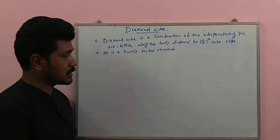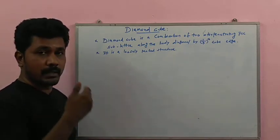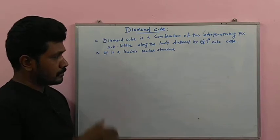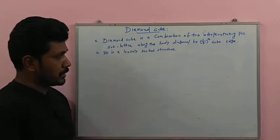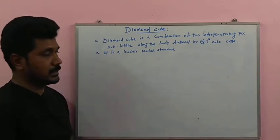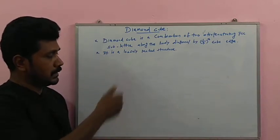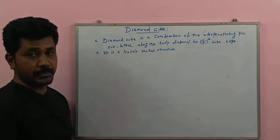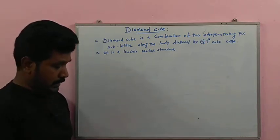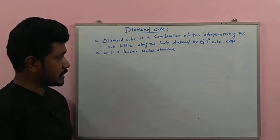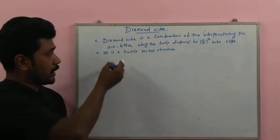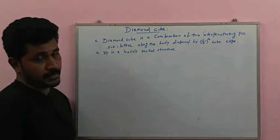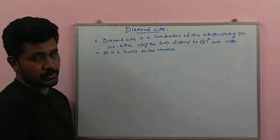We will discuss the diamond cubic structure step by step: the number of atoms per unit cell, coordination number, atomic radius, and atomic packing factor calculations — finally determining why diamond cubic is termed a loosely packed structure.